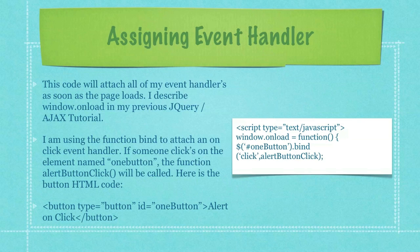I described window.onload in my previous jQuery Ajax tutorial, if you want to see more on that. I am using the function bind to attach an on-click event handler. If someone clicks on the element named one button, in this example that I have right here, the function alert_button_click will be called. And here is the HTML code in the bulleted item in the lower left-hand side of the screen that will trigger this event when that button is clicked.